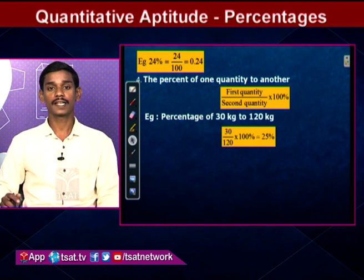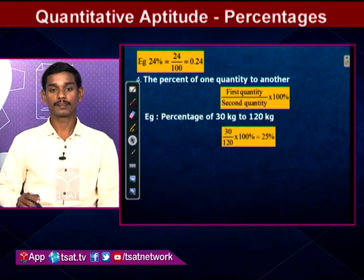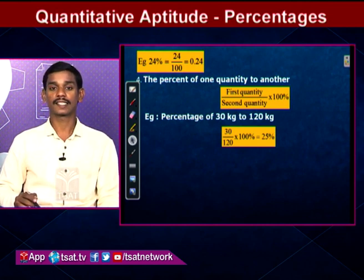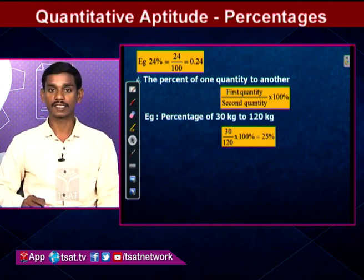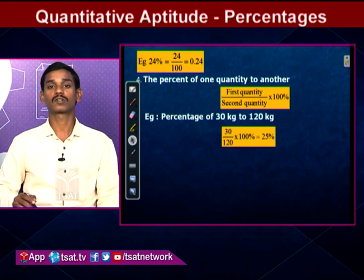Note: the percentage of two quantities must use the same units. For example, the percentage of 30 to 120 — first quantity is 30, second quantity is 120 — so 30/120 × 100 equals 25 percent.